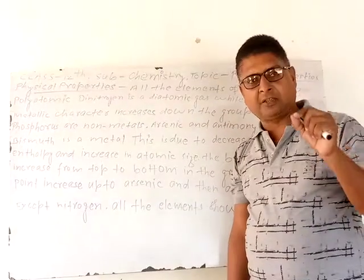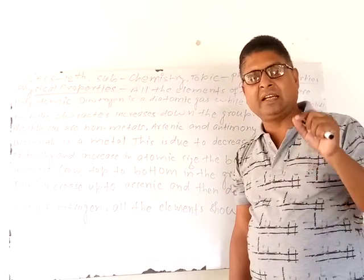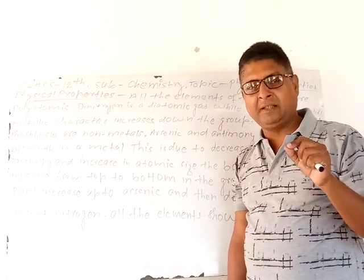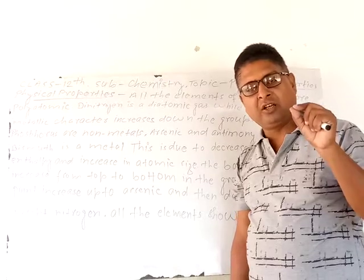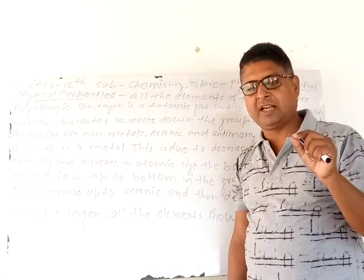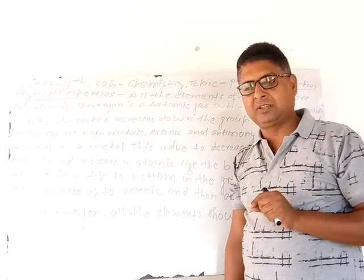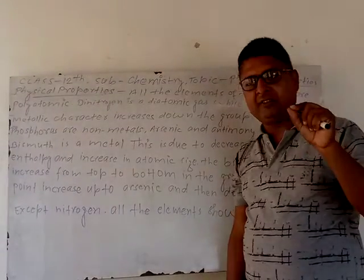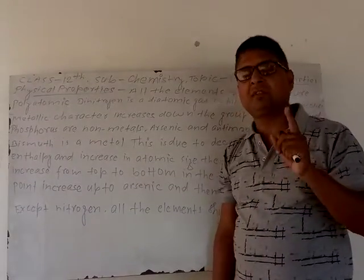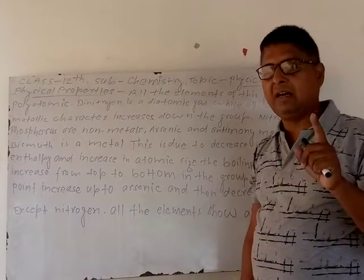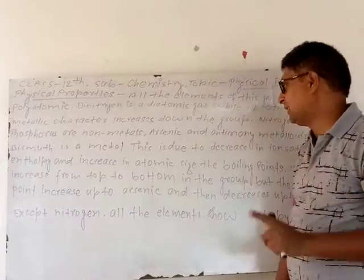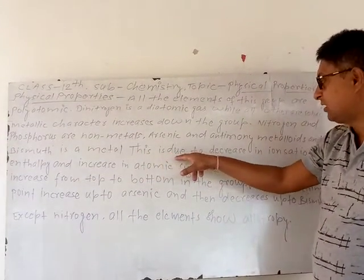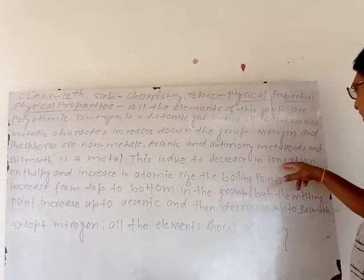Arsenic and antimony are metalloids, and bismuth is a metal. So once more: in Group 15, nitrogen and phosphorus are non-metals, arsenic and antimony are metalloids, and bismuth is a metal. This is clear — let's move ahead.